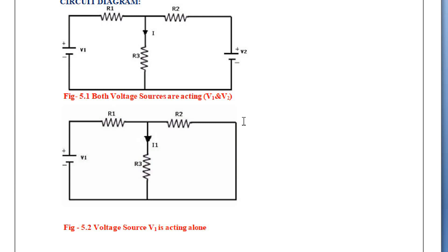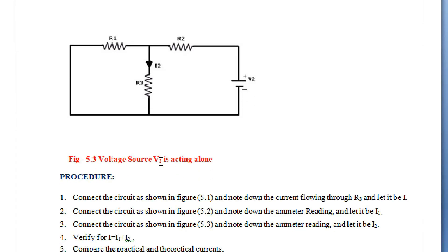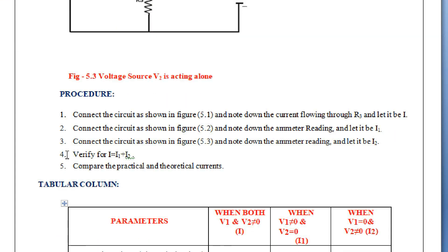In the second case, voltage source V2 is short circuited and we are measuring current through R3, let it be I1. In the third case, V1 is shorted and only V2 is acting alone, and we are measuring the current through R3, that is I2. We have to verify in the fourth step that I equals I1 plus I2, indicating that the total response equals the sum of individual responses.